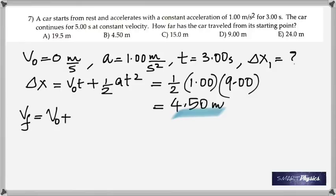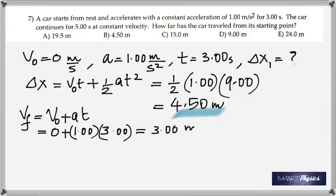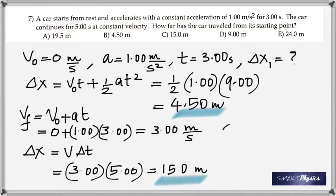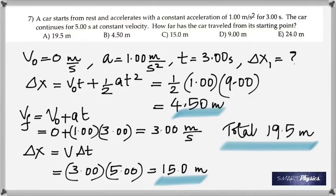In the second part the car moves at constant velocity, which equals the final velocity of the first part. Final velocity = acceleration × time = 1 × 3 = 3 m/s. For constant velocity, distance = 3 × 5 = 15 meters. Adding both parts gives a total distance of 19.5 meters.